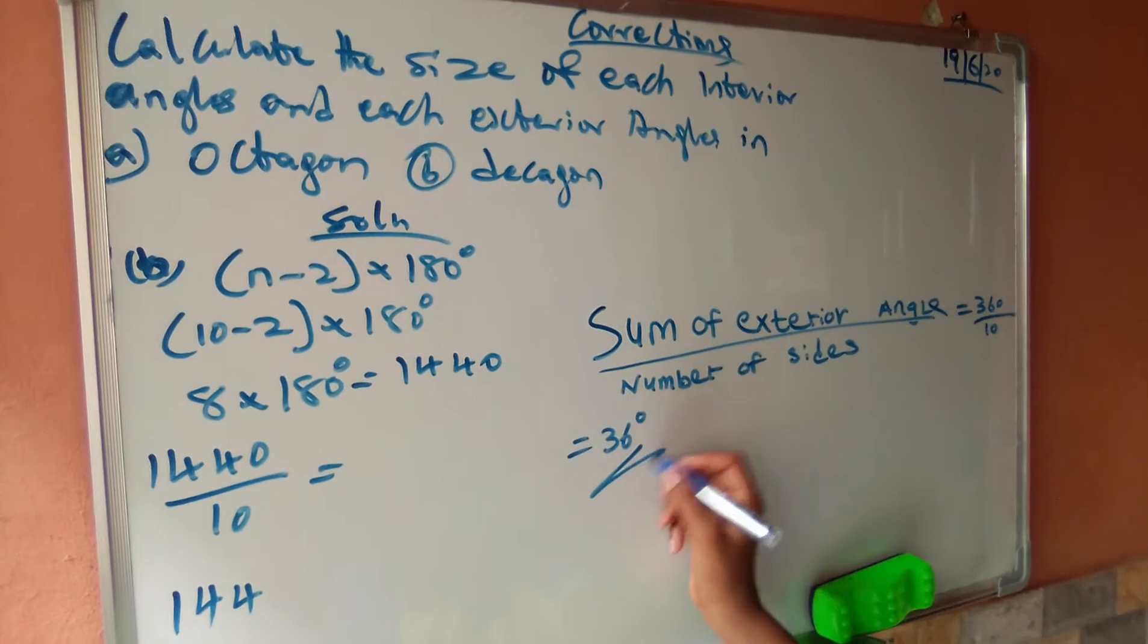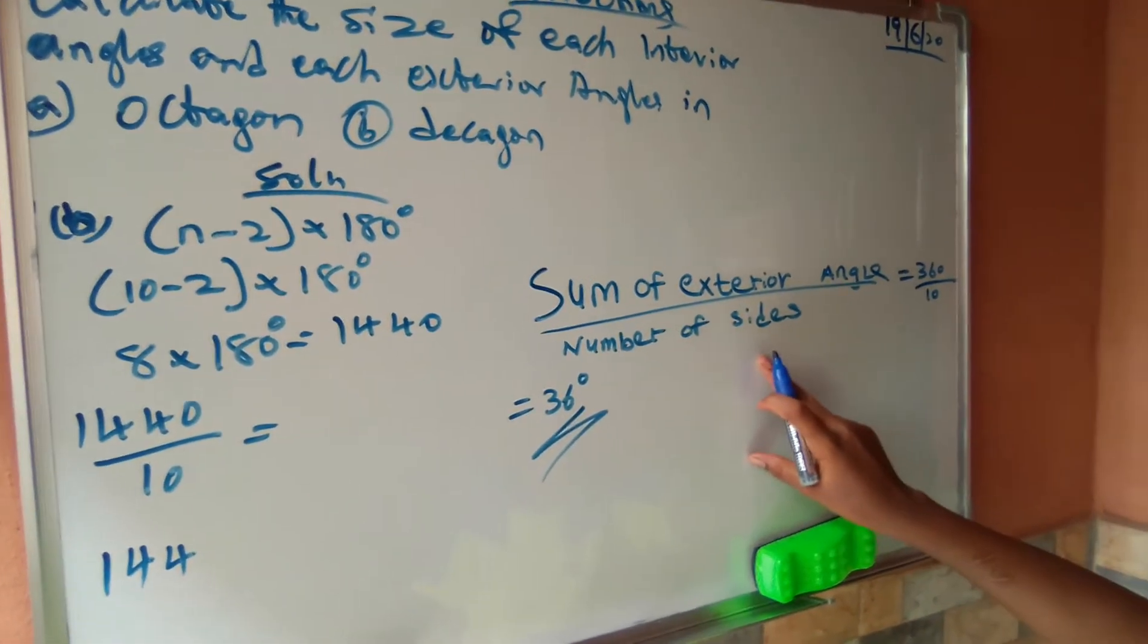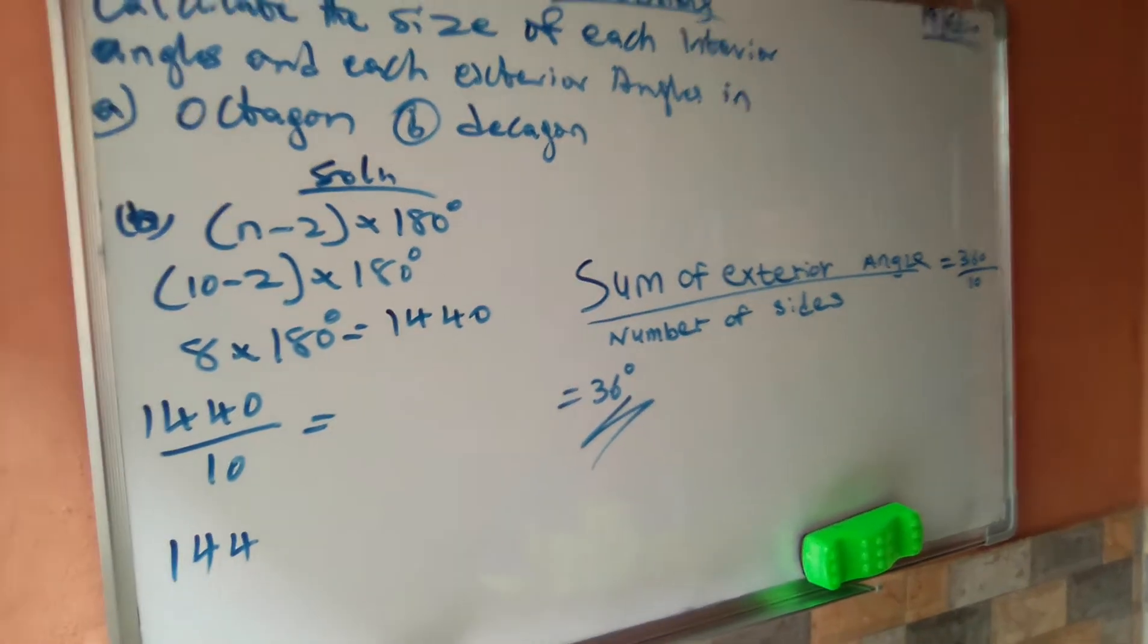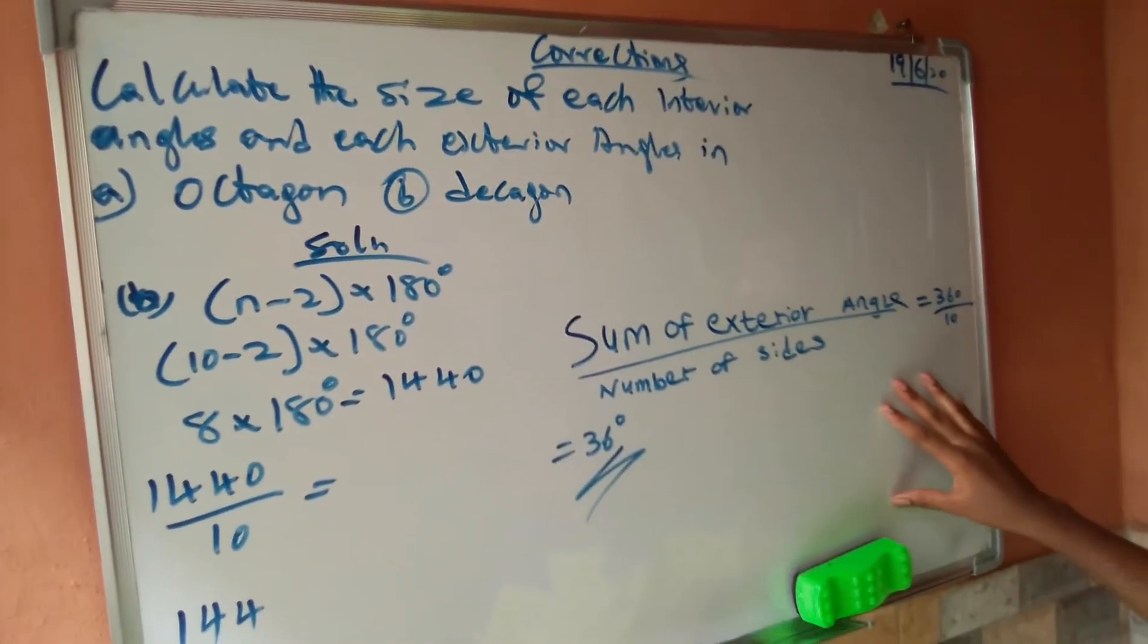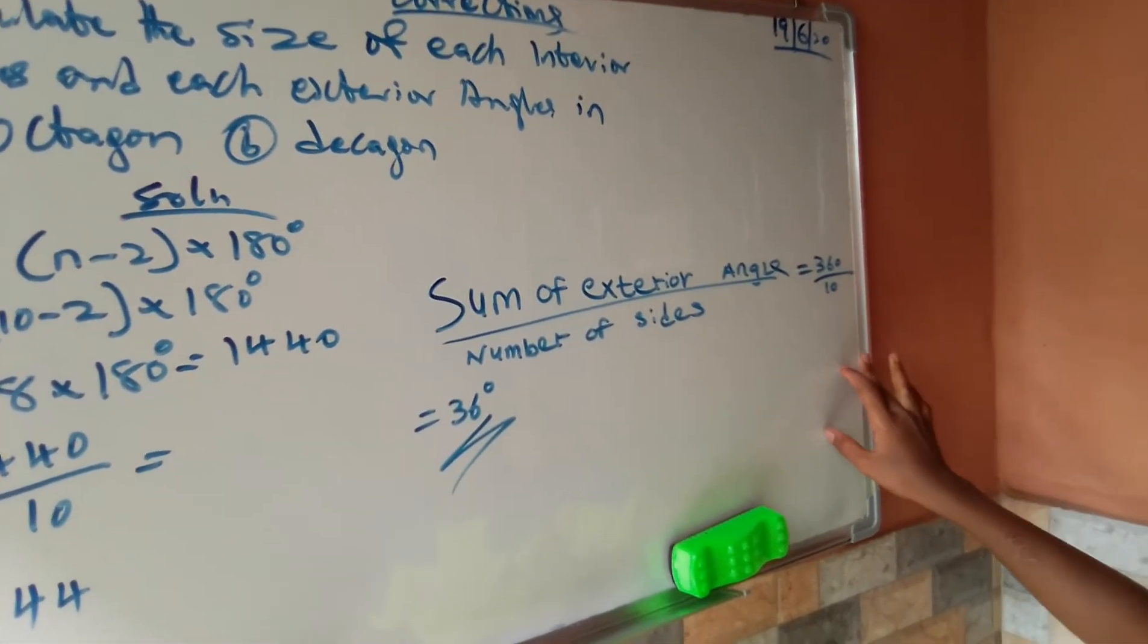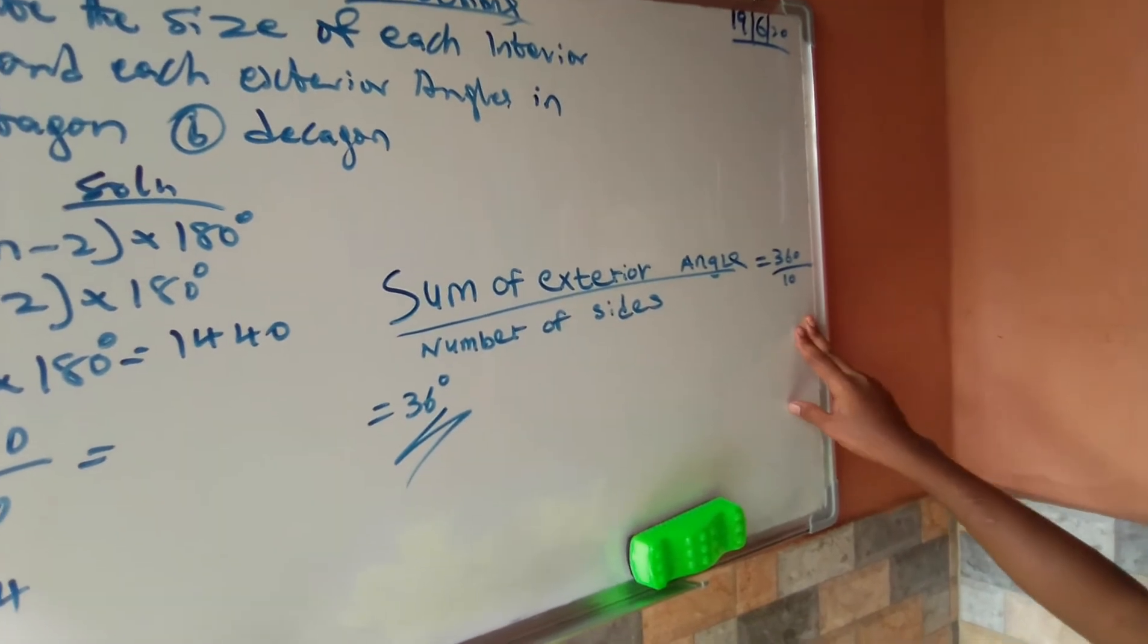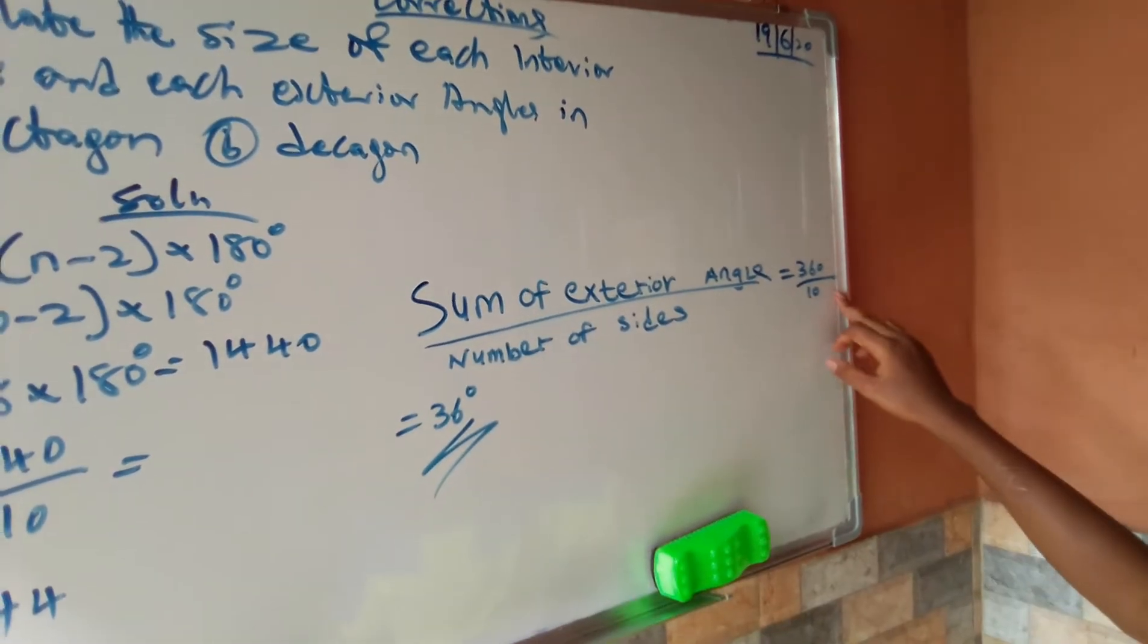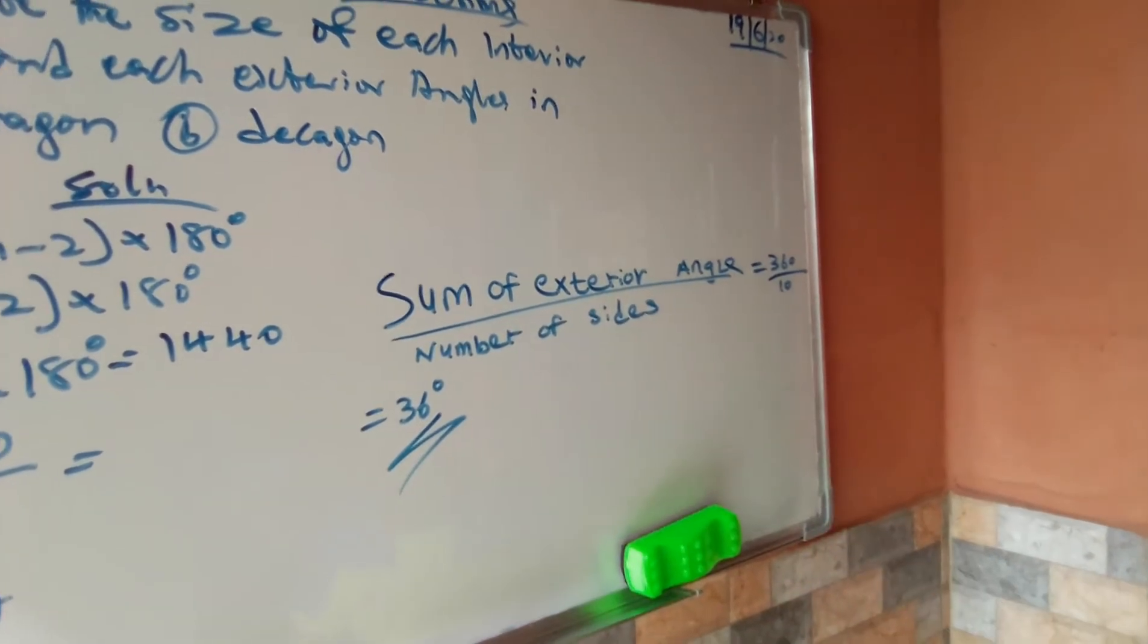Tell us how you are solving it. The number of sides... 360 divided by 10 equals 36 degrees. That's my answer.